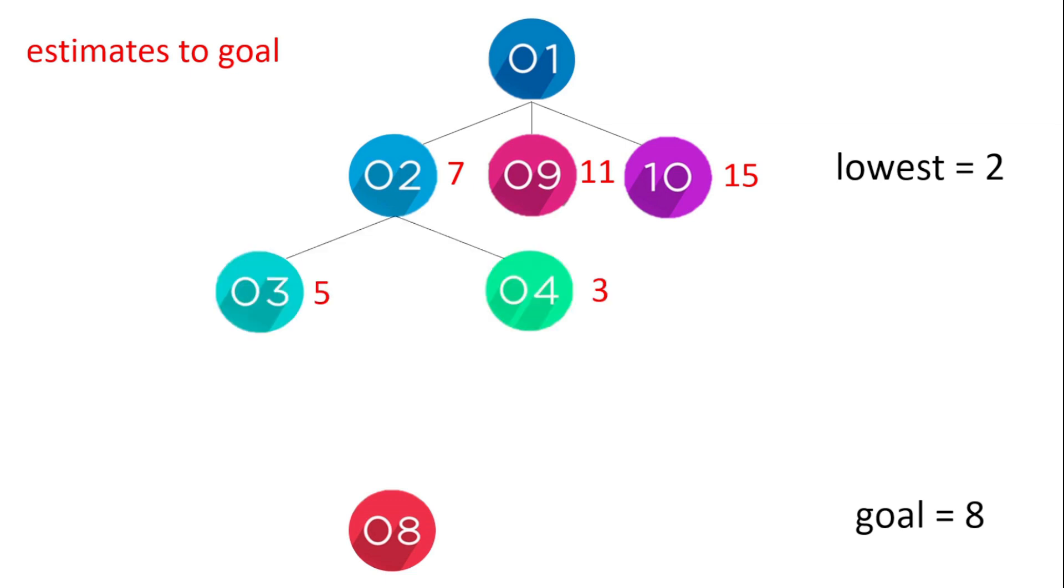So we go through node 2, and that has two children: node 3 and 4. And node 4 has the lowest estimated distance to the goal.